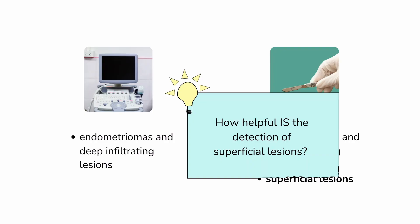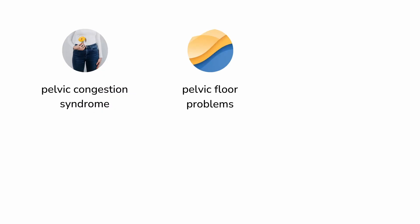Even if you have superficial lesions, the explanation for your pain or other symptoms and the thing that needs treating could be something entirely different. Hopefully, obvious explanations like fibroids, adenomyosis, and infection have already been ruled out by your doctor. But you may need to actively look for hidden causes like pelvic congestion syndrome, fibromyalgia, or pelvic floor tension. Or you may need to look more generally at the nervous system, especially the autonomic nervous system, because it can contribute to pelvic pain and fertility problems.